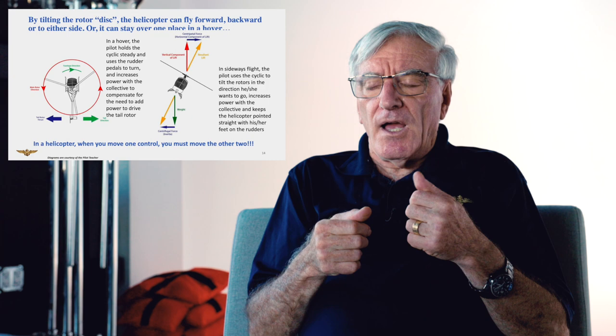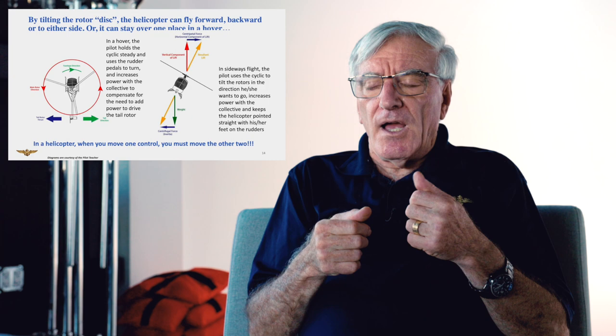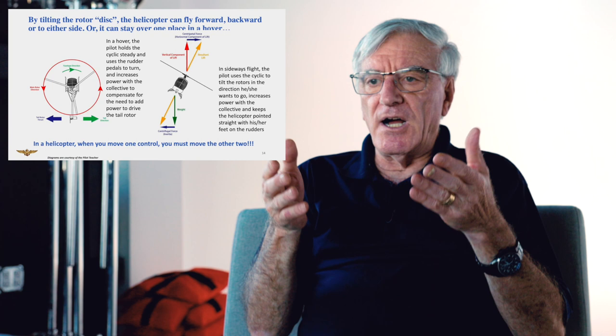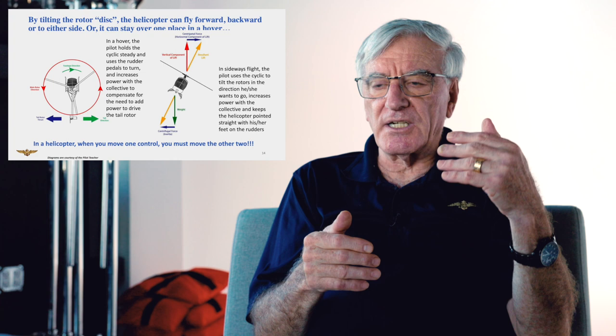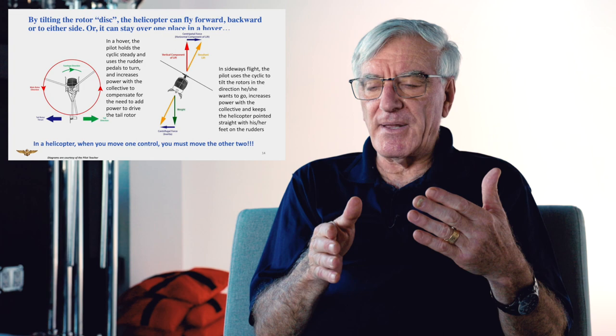For example, if you want to fly sideways in a hover, you're in a hover, what you do is you move the cyclic slightly to the left, you have to add a little bit of power, and you have to add a little bit of left rudder in an American helicopter, right rudder in a French helicopter to compensate for the additional torque. You want to stop, you basically move the cyclic back to the middle, lower the collective, and then move your feet accordingly to compensate for the change in torque.